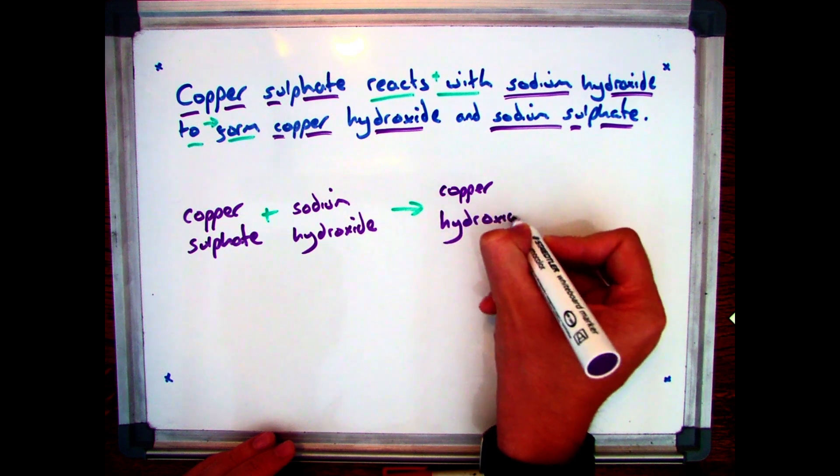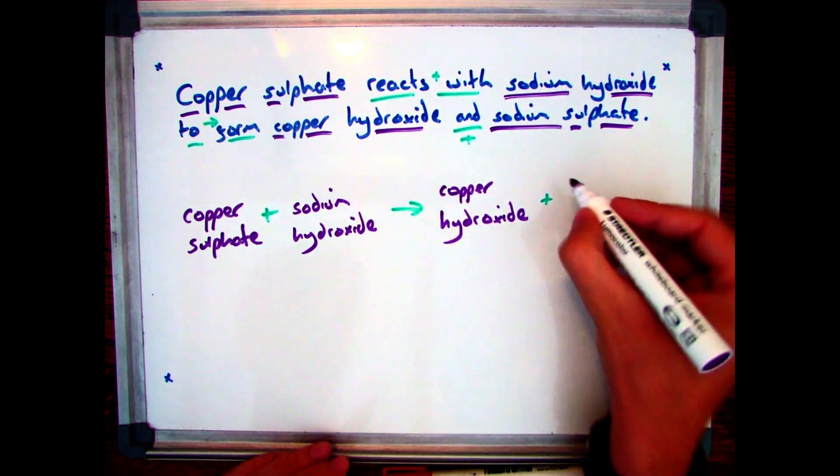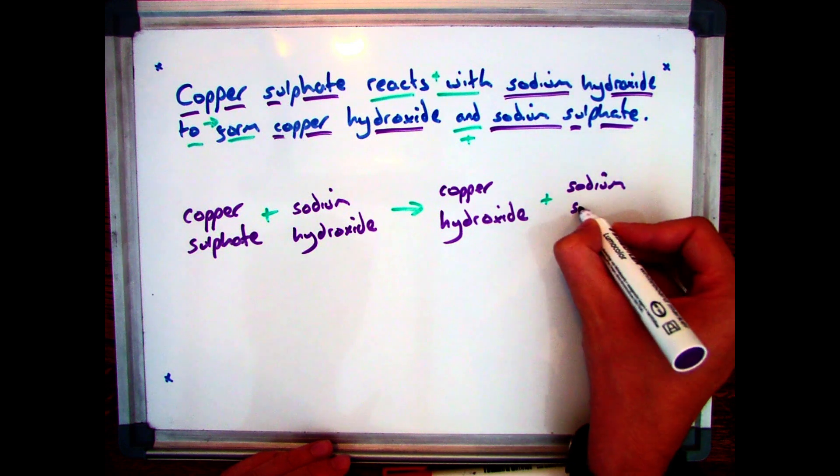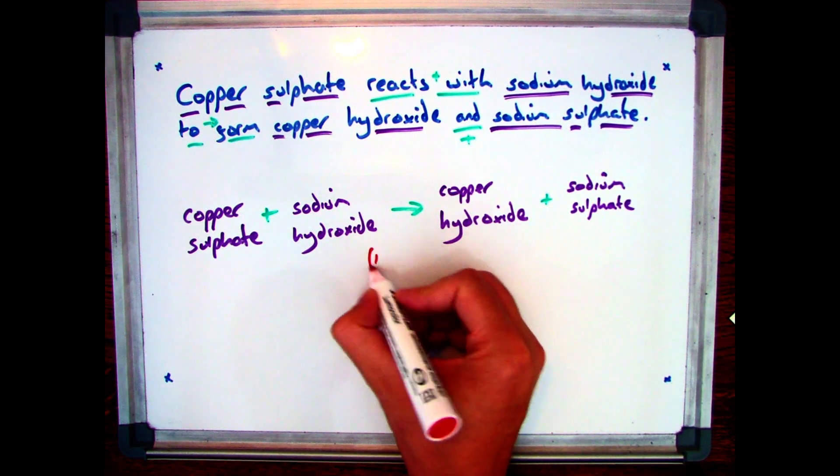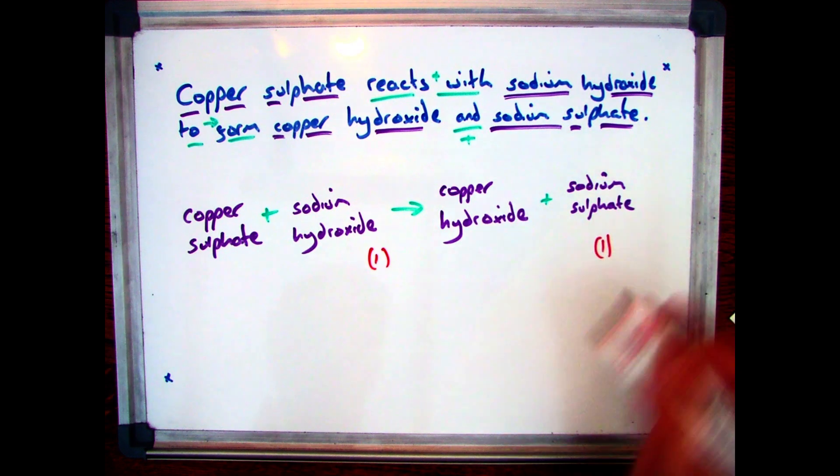And I'm forming copper hydroxide and sodium sulfate. So that's copper hydroxide plus sodium sulfate. And you get one mark for the reactants and one mark for the products.